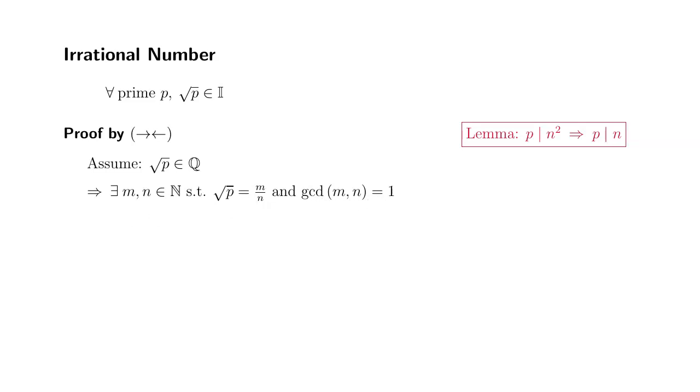Then we can just simply square both sides of the equation. We can get that p is equal to m squared over n squared. By multiplying both sides by n squared, we have p n squared is equal to m squared.